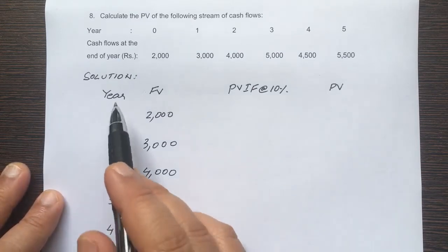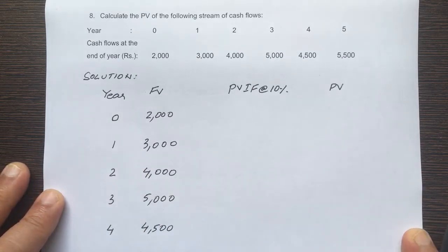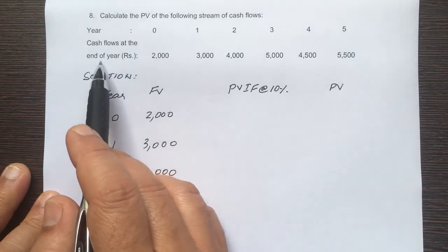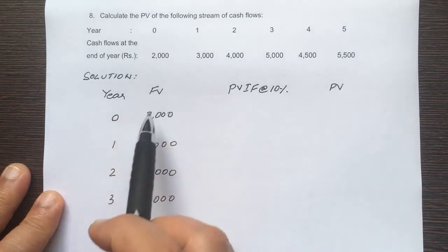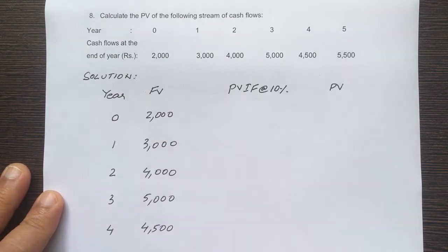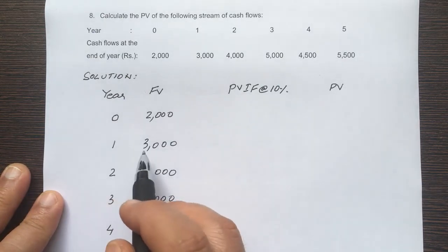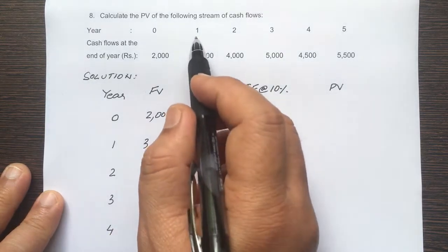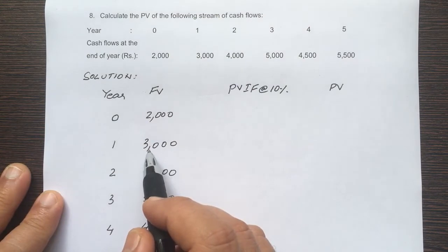Now what is year zero? Is there such thing as year zero? Yes, basically year zero is now, the current present, right now. That is year zero. And it says here that the cash flows occur at the end of the year. Okay, now year zero is now, so it's happening now.